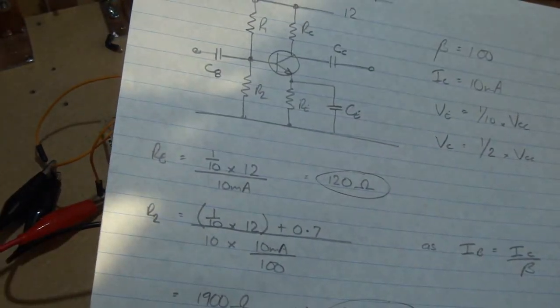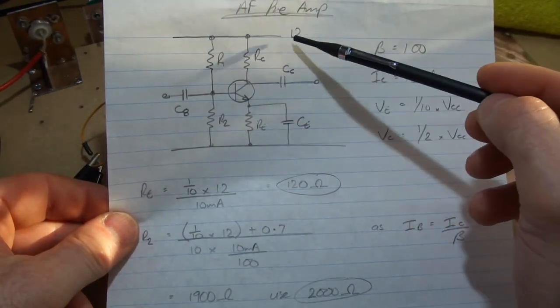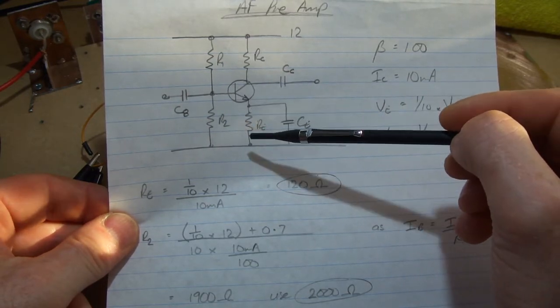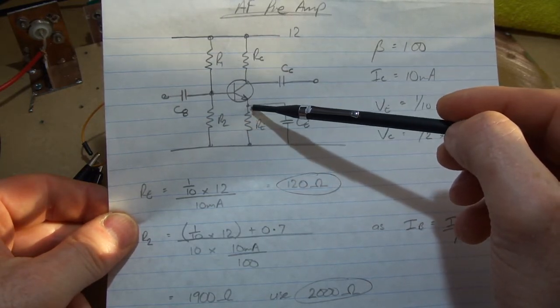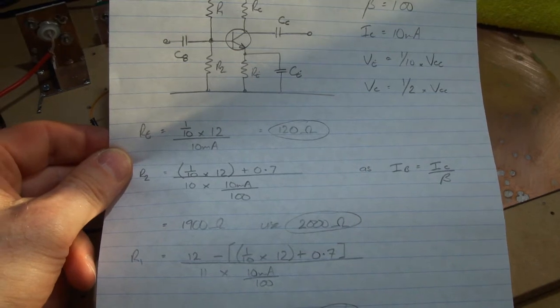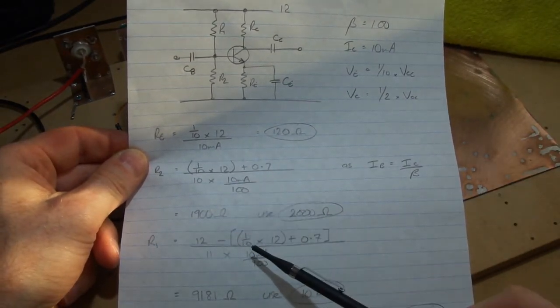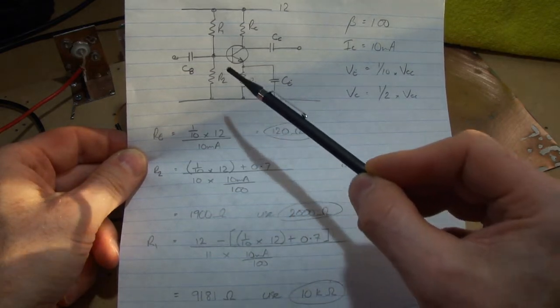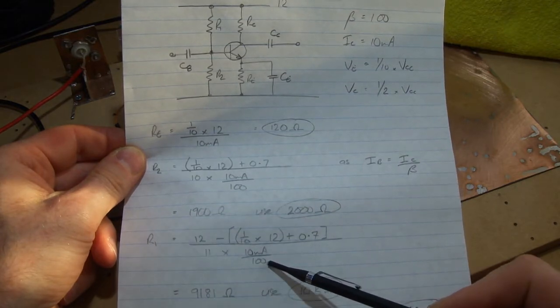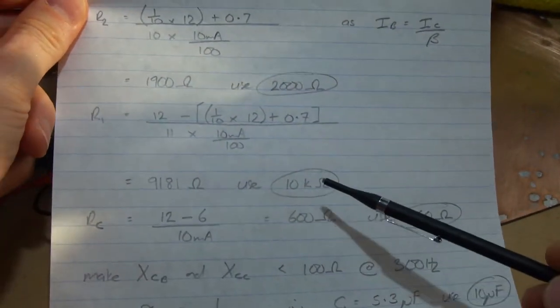Now across R1, let me just zoom out a little bit here if I can. We have the voltage across this is going to be 12 volts, and at this side it's going to be again the same voltage we had before, so 1.2 plus 0.7, which is the figure we've got here. So 12 volts minus, and we'll just do it in longhand, a tenth times 12 plus 0.7 gives me that, so that's the voltage across that, divided by 11 times IC divided by beta. And that turns out to be 9181, so we'll use 10k ohms.